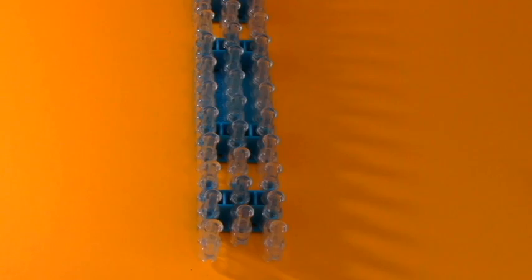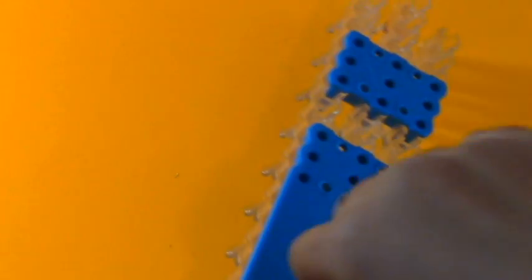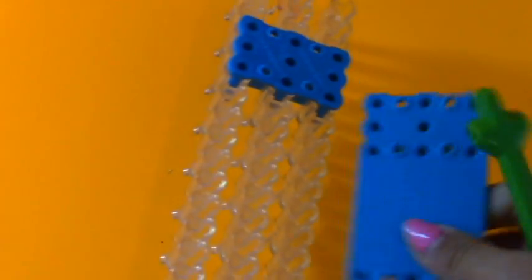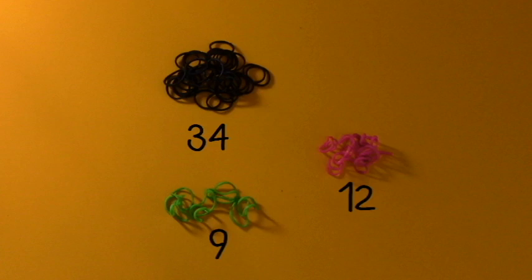To start off, you're going to want to place your loom the way that the arrow would be pointing towards you and then take the middle base off. You are going to want 34 rubber bands for your main color, which is normally black or white.